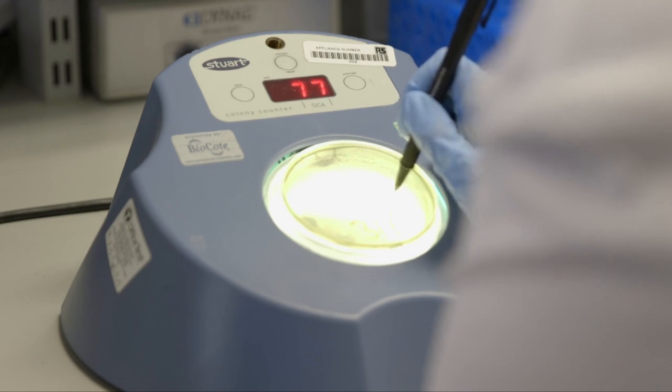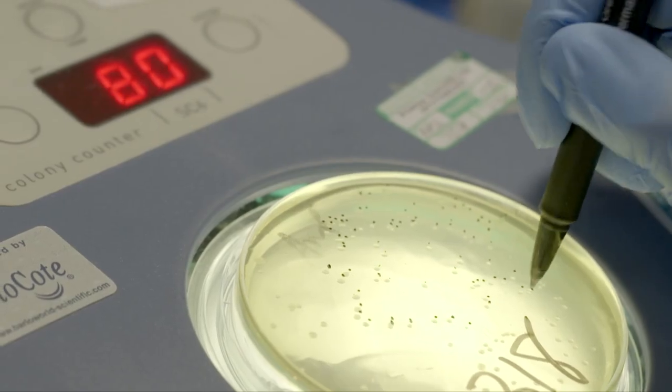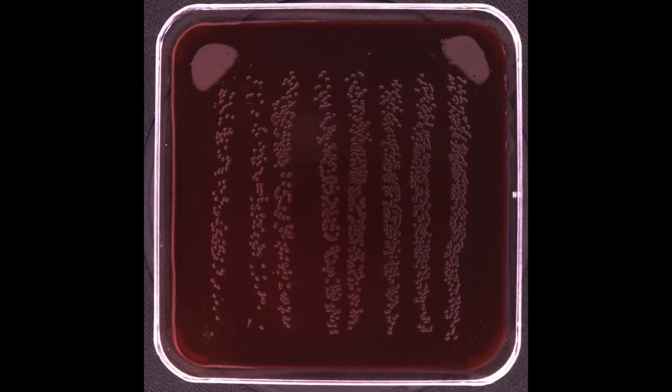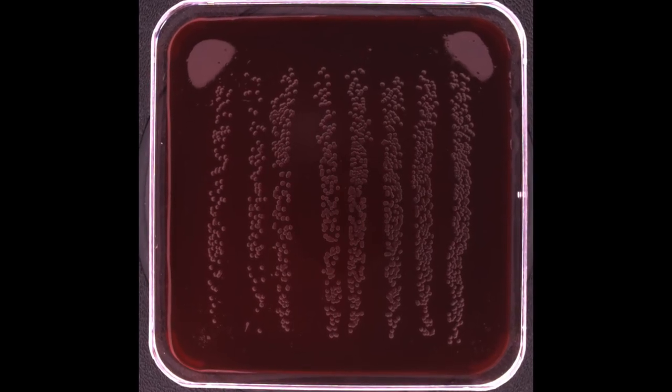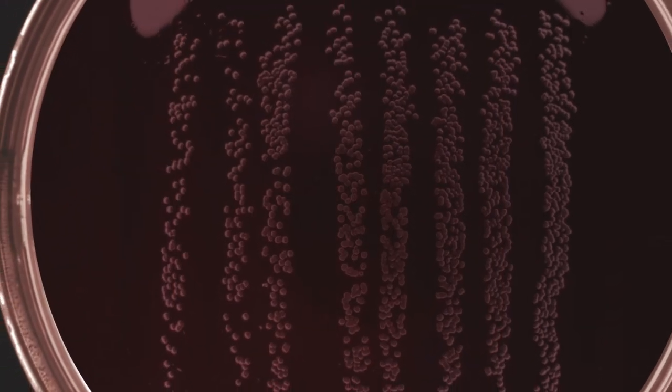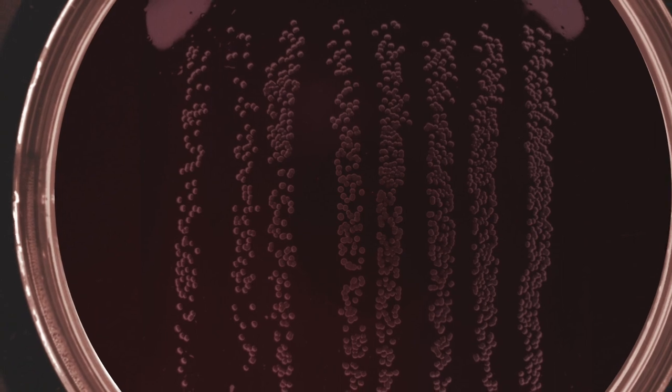When the scientists first started doing their SBA assays, they would plate one well of the bacteria onto the plate and then had hundreds of very small colonies to count by eye, which was very tedious and laborious. This meant they would only count 16 plates in a day, as that was all that was possible counting manually.